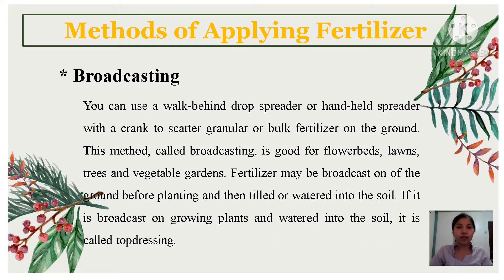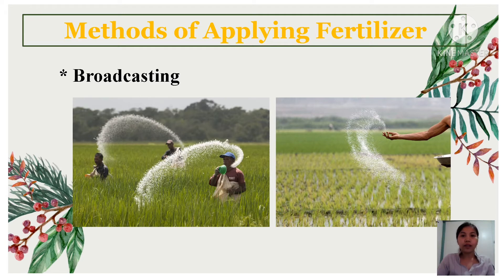Next is broadcasting. You can use a walk-behind drop spreader or handheld spreader with a crank to scatter granular or bulb fertilizer on the ground. This method, called broadcasting, is good for flower beds, lawns, trees, and vegetable gardens. Fertilizer may be broadcast on the ground before planting and then tilled or watered into the soil. If it is broadcast on growing plants and watered on the soil, it is called top dressing. As shown in the illustration, granulated fertilizers are scattered by throwing them onto the field.